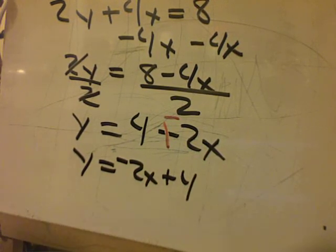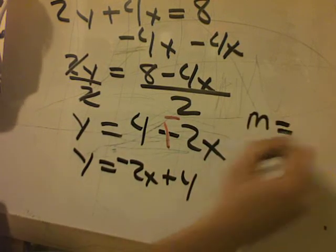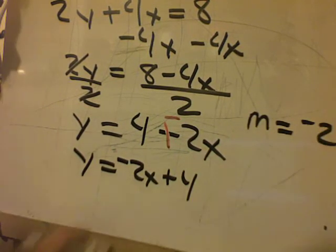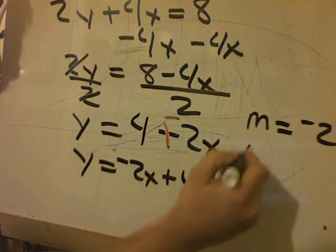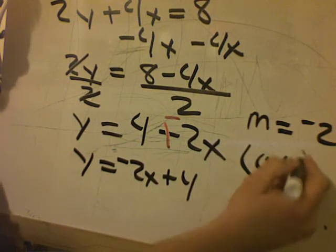So now if I want to identify my slope, my slope is negative 2. And my y-intercept is 0, 4.